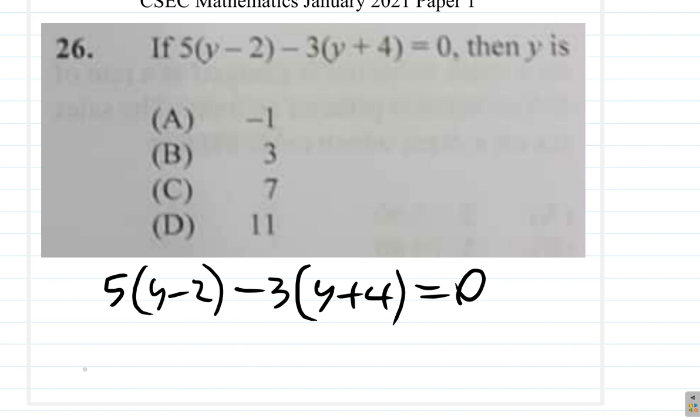Is it negative 1? Let's see. 5 times negative 1 minus 2 minus 3 times negative 1 plus 4 equals 0. Now, if you're lucky, you're going to get through on this first attempt. Alright? No, here. This is very certain.